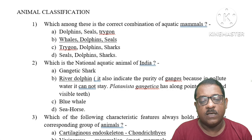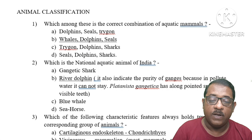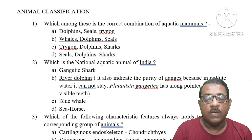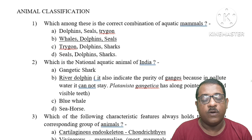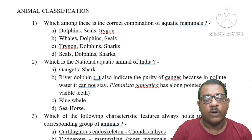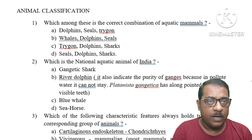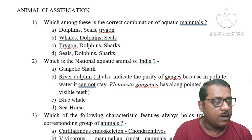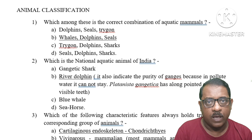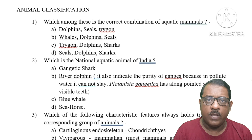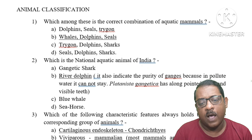Question 2: Which is the National Aquatic Animal of India? Option A: Gangetic Shark. Option B: River Dolphin. Option C: Blue Whale. Option D: Sea Horse. The right answer is River Dolphin. The River Dolphin is the National Aquatic Animal and also indicates the purity of the Ganges — it lives in clean water, not polluted water.